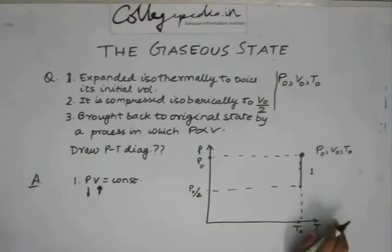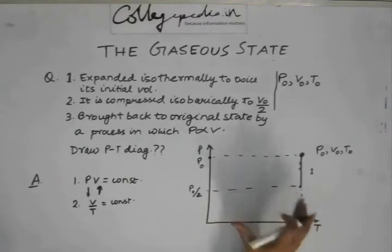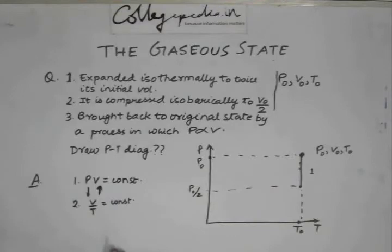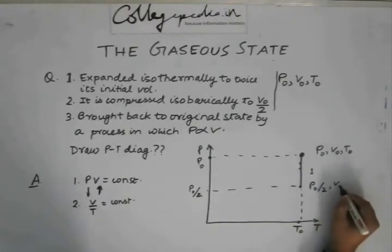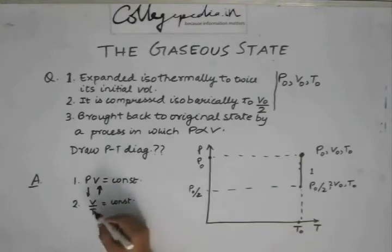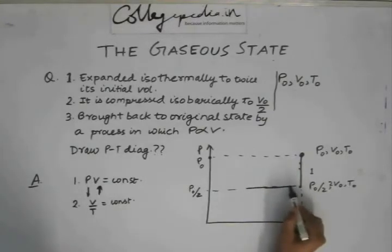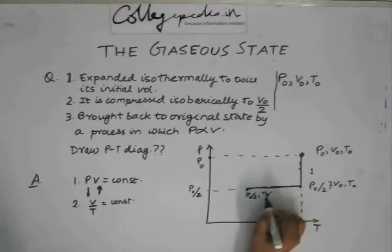The second step is isobaric compression to V₀/2, so V/T is constant. On the P-T diagram, this is a horizontal line since pressure is constant at P₀/2. The volume decreases from 2V₀ to V₀/2 — a factor of 4 — so the temperature also decreases by 4 times. The state at the end of this step is P₀/2, V₀/2, and T₀/4, so this point is at T₀/4 on the diagram.